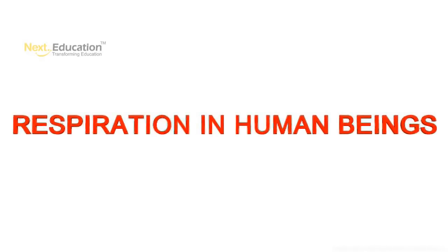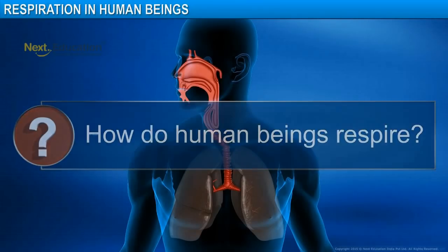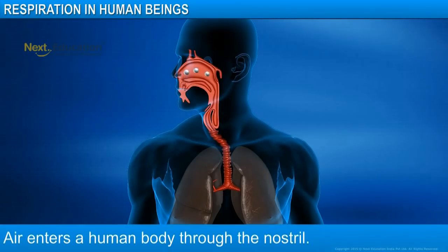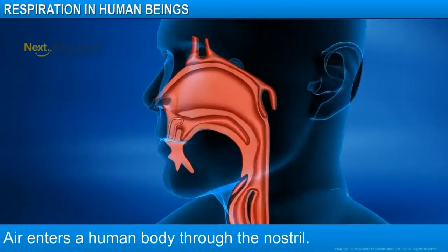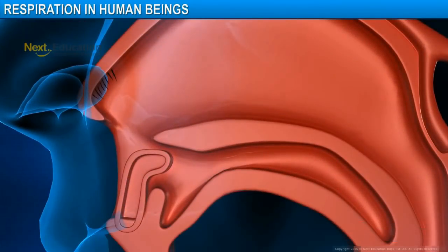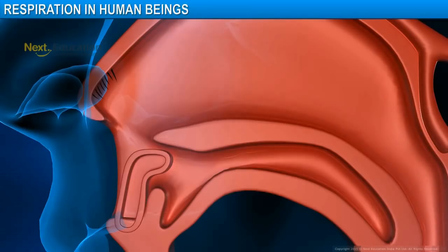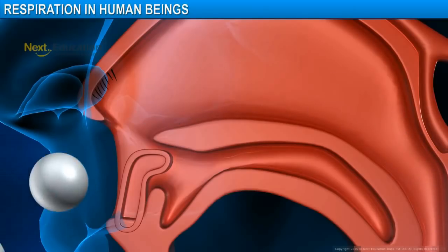In this module, you will learn about respiration in human beings. How do human beings respire? In human beings, air is drawn into the body through the nostrils. Nostrils are lined with fine hairs and mucus that filter the air as it passes through.